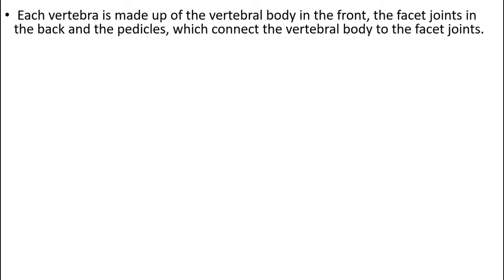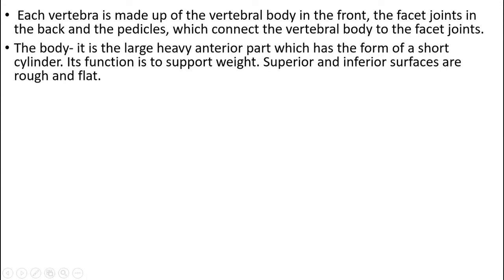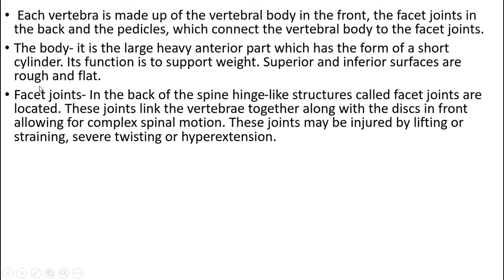The second part of this question is to describe the vertebra. Each vertebra is made up of the vertebral body in the front, the facet joints in the back, and the pedicles which connect the vertebral body to the facet joints. The body is the large, heavy anterior part which has the form of a short cylinder. Its function is to support weight; superior and inferior surfaces are rough and flat.